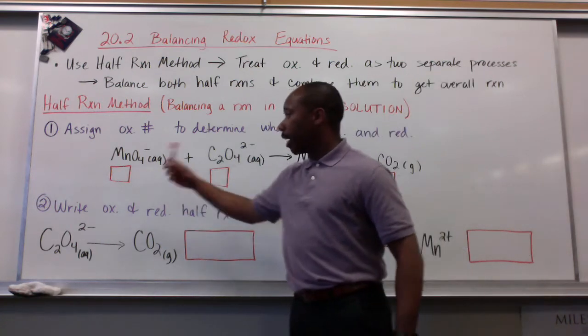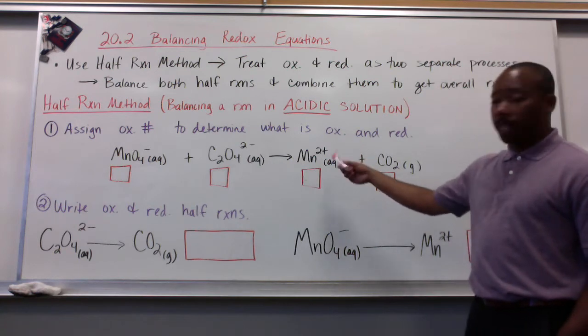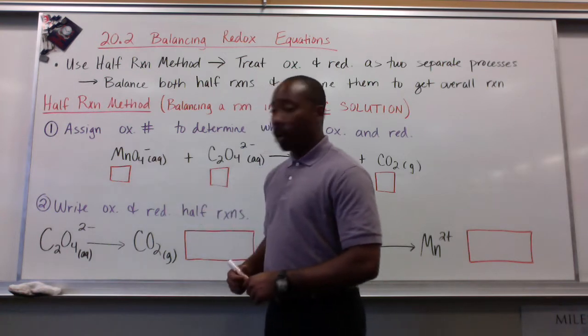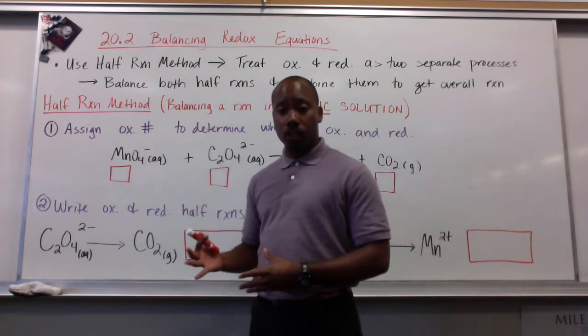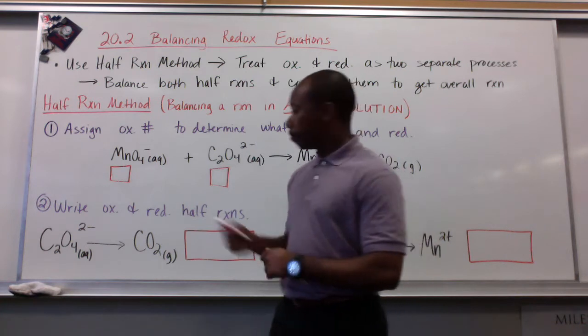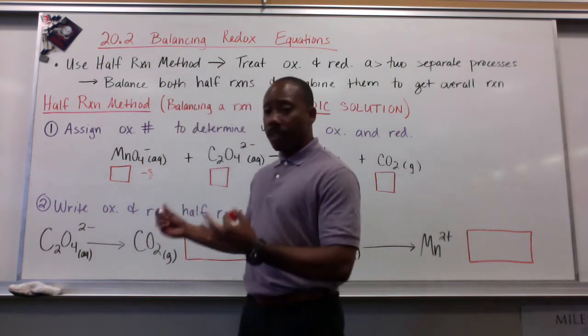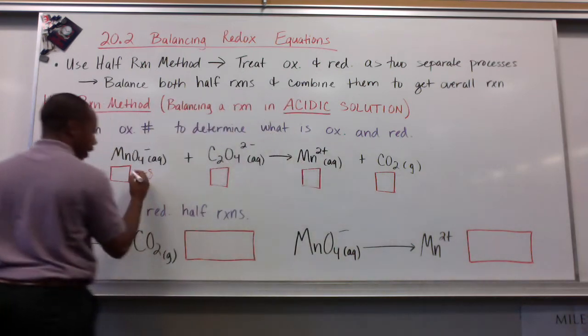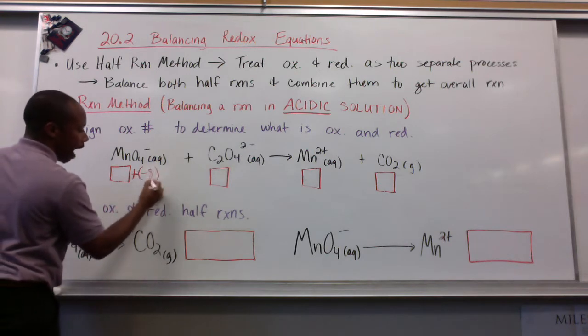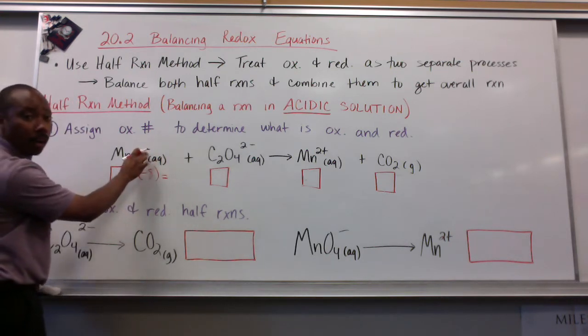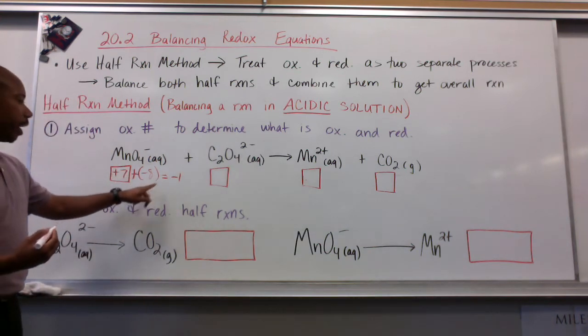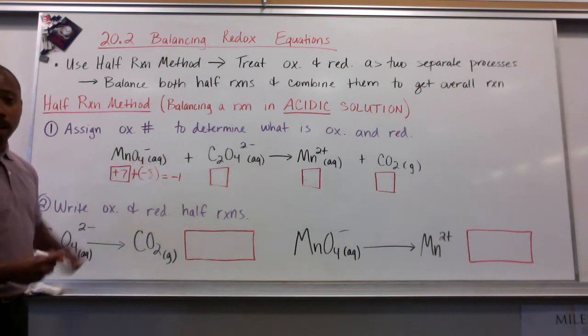Our first substance, we have permanganate reacting with oxalate, producing manganese 2+ and carbon dioxide gas. So let's look at oxygen. Oxygen has an oxidation state of minus 2. I have 4 oxygen, so that's minus 8. Manganese is with this, so what charge does manganese have or what oxidation state does manganese have? I can add with negative 8 to give me the overall charge of this ion, which is negative 1, and that's going to be a positive 7. So manganese has an oxidation state of plus 7.